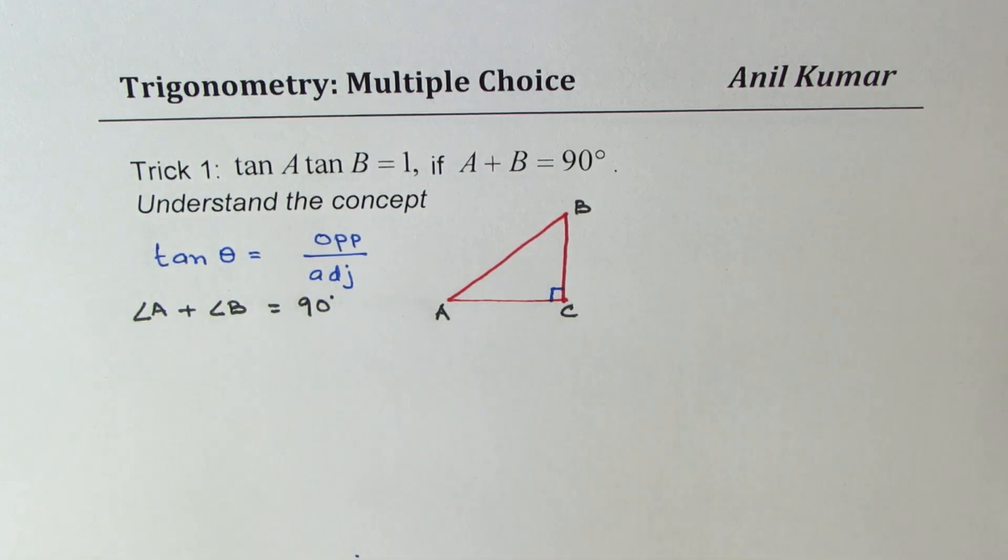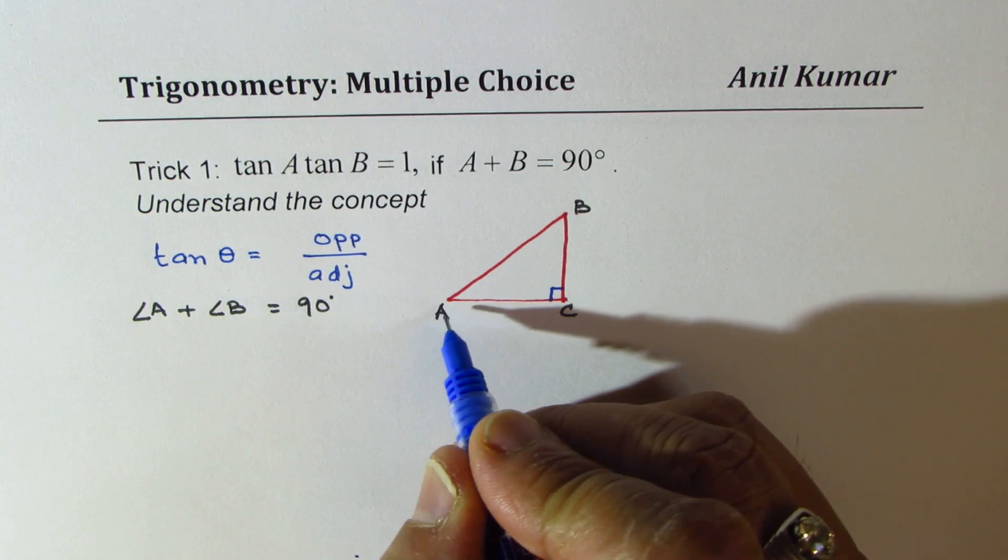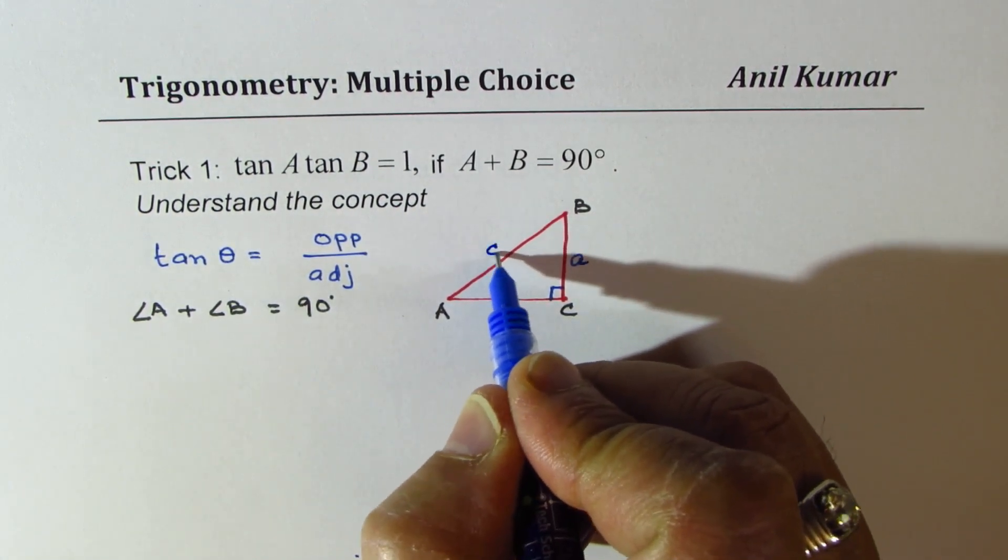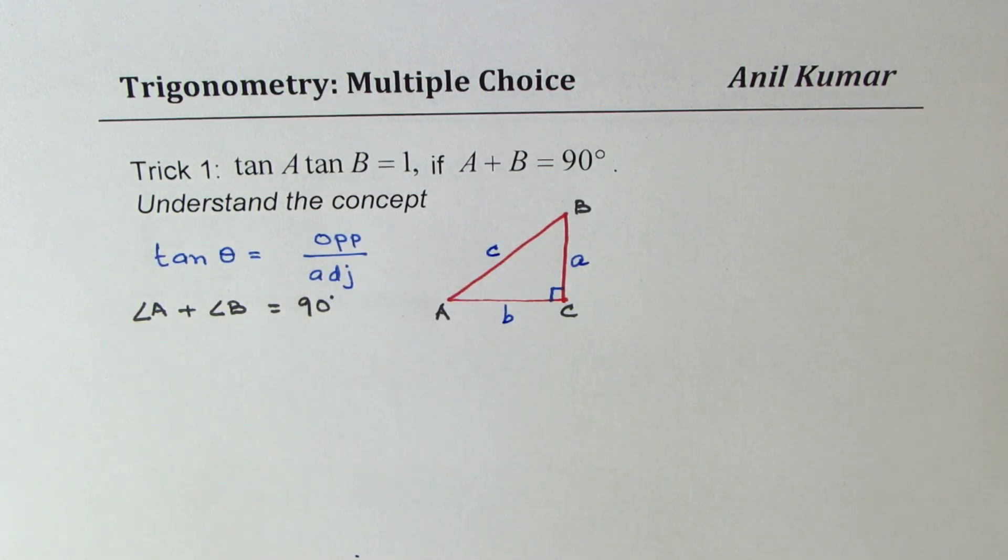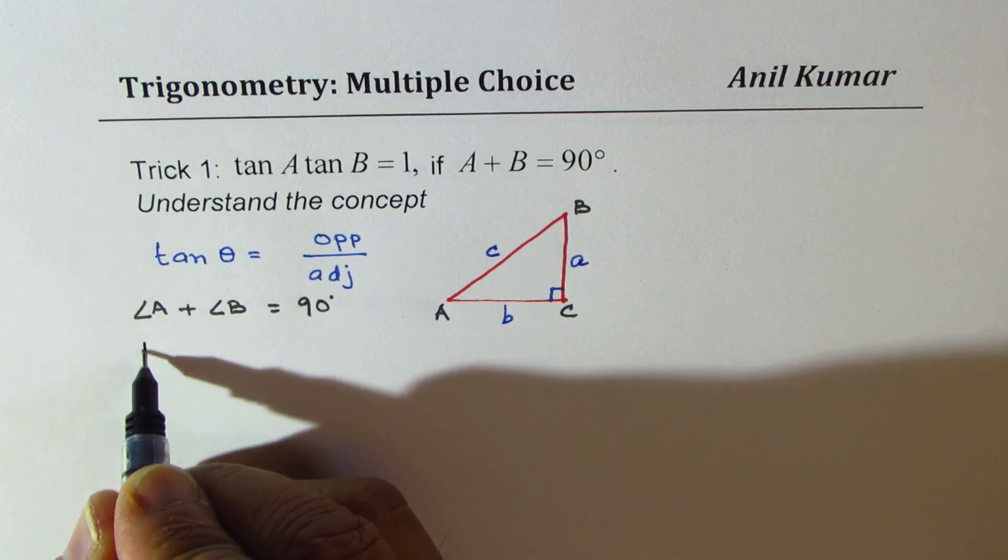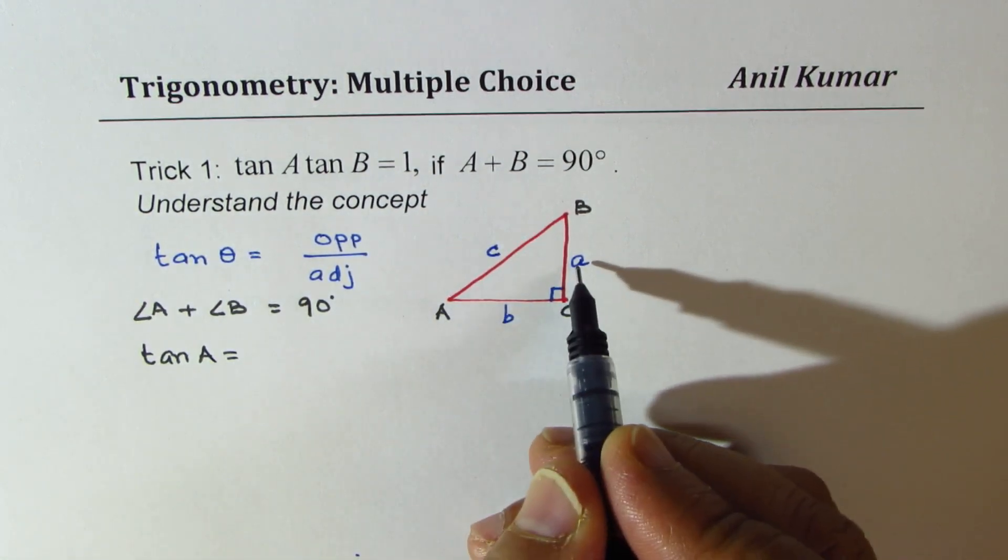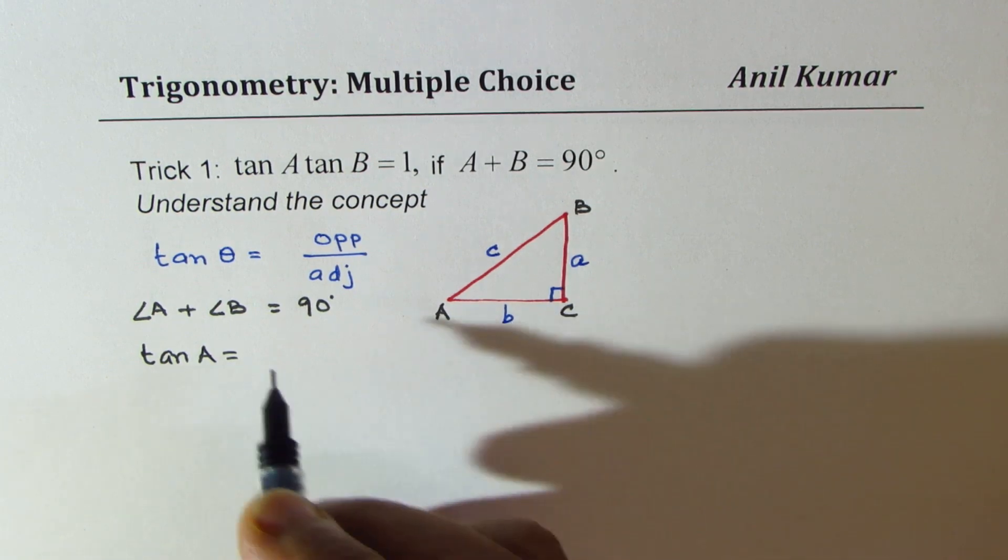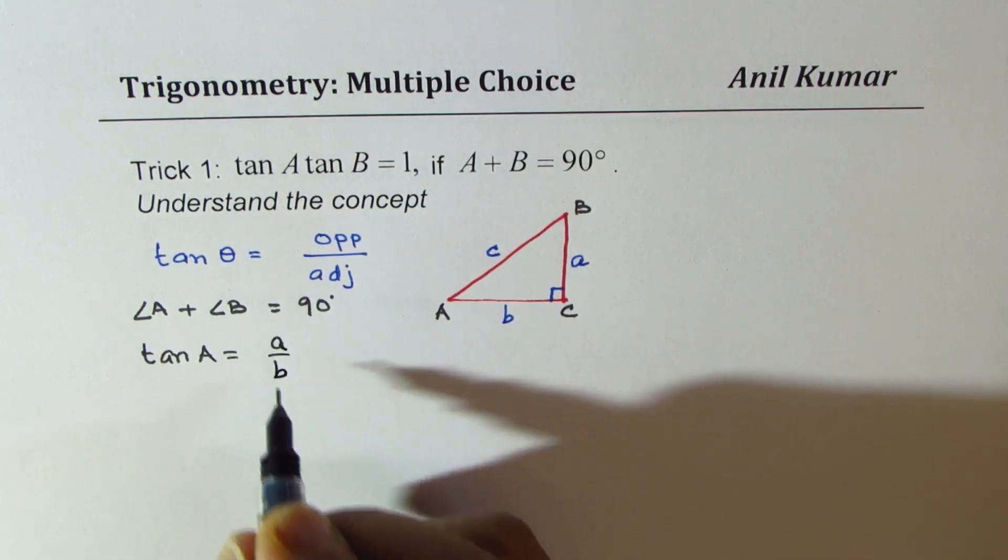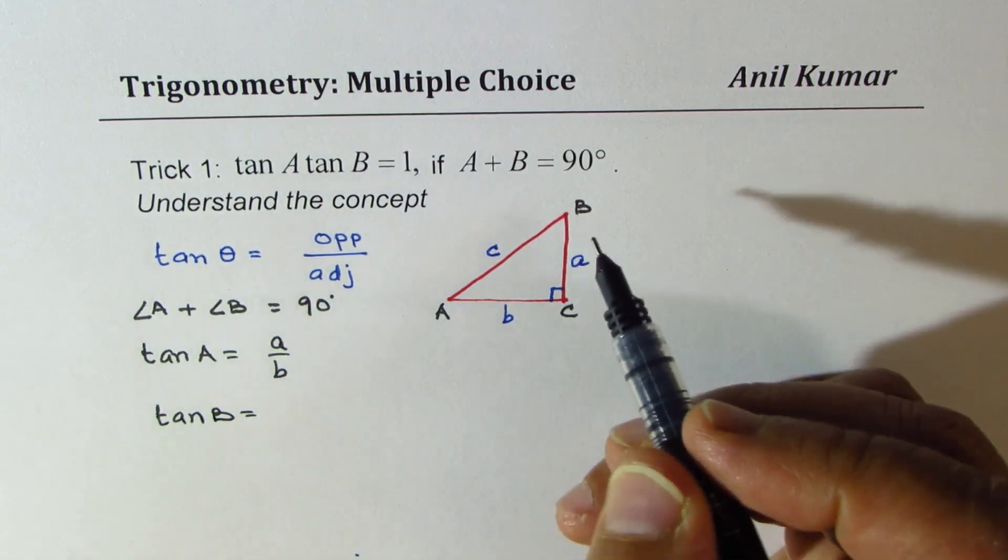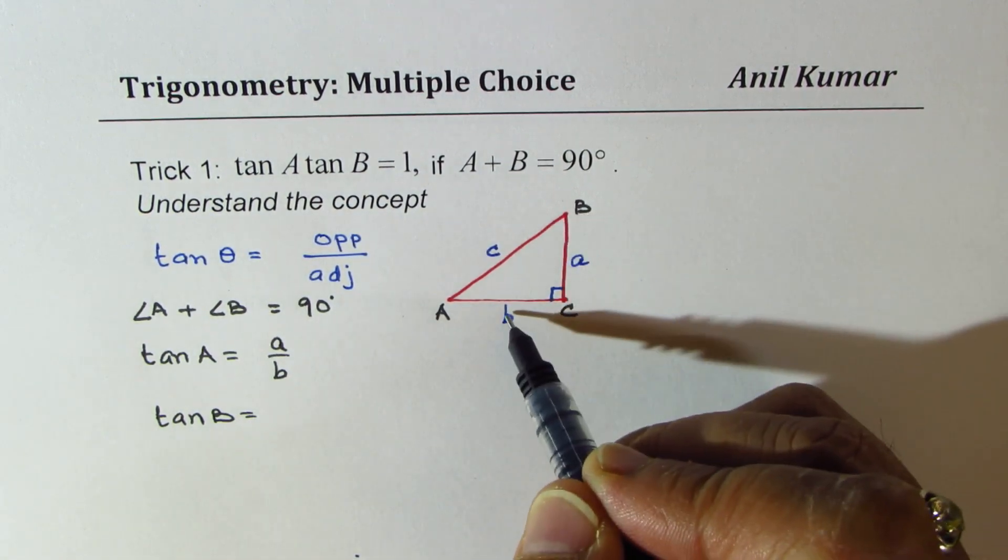Now generally, we will say side opposite to A is lowercase a, opposite to B is b, and c opposite to C. Now in this case, let us see, what is tan A? Tan A is opposite side over adjacent side, so it is a over b. What is tan B? Tan B, you have to look from this side, it is b over a.